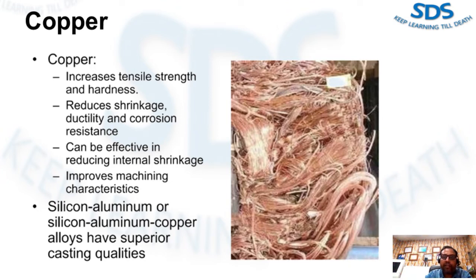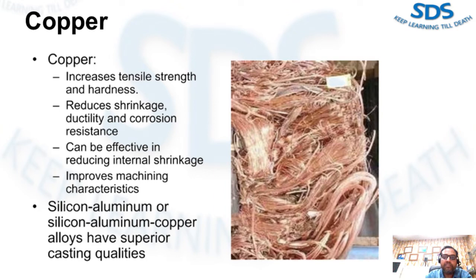Binary copper-aluminum alloys have been used but suffered from lack of fluidity and hot shortness. They have been replaced by silicon-aluminum or silicon-aluminum-copper alloys having 2 to 4% copper and 5 to 9% or more silicon. This type of alloy has superior casting qualities. The melting point of copper in aluminum is 1,980°F. The solubility of copper in aluminum is 5.6% at 1,018°F.